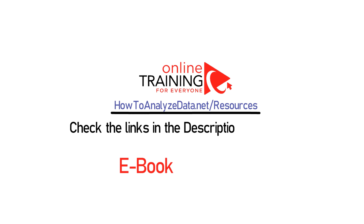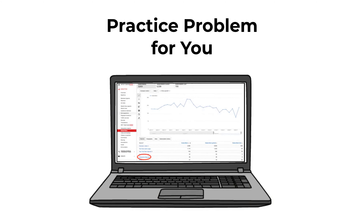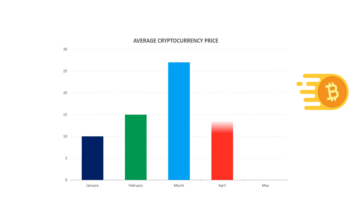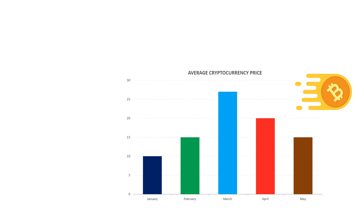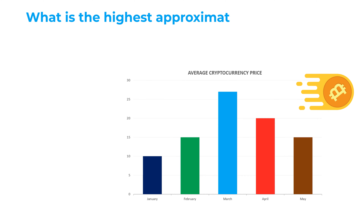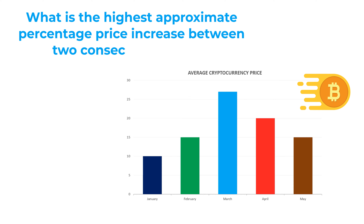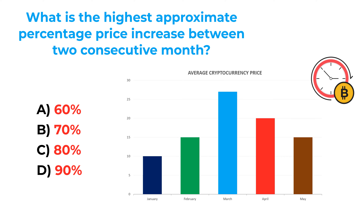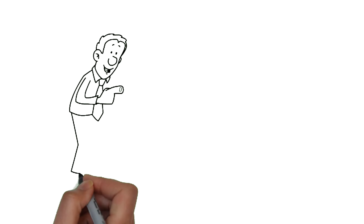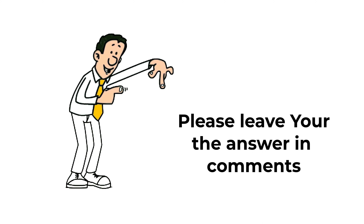Hopefully you've nailed this question and now know how to answer similar problems on the test. If you need more questions like this, please check out my ebook in the description section of this video. Now here's a practice problem: you're presented with a chart showing the average price of cryptocurrency from January to May. You need to calculate the highest approximate percentage price increase between two consecutive months. Choices are A: 60%, B: 70%, C: 80%, D: 90%. Post your answer in the comments.